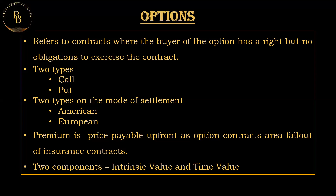The extrinsic value includes both the time value and any additional value beyond the intrinsic value. To recap: a call option is a special agreement to buy something at a fixed price; a put option is a special agreement to sell something at a fixed price. ATM is right on target; ITM is in the green making profit; OTM is out of luck not making profit yet. Intrinsic value is the real value based on stock price; time value is the waiting bonus; extrinsic value is the total extra value including time value. Options are tools investors use to manage risk or make bets on future market movements.